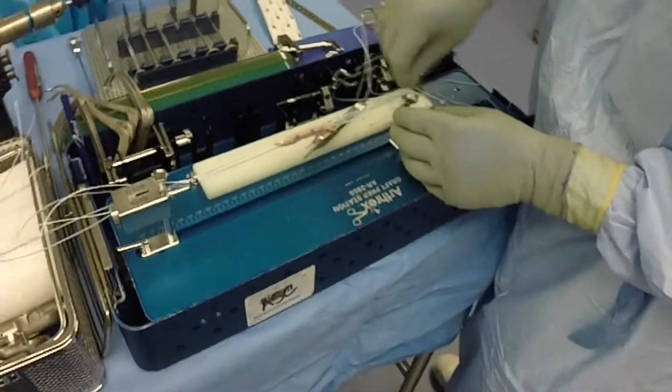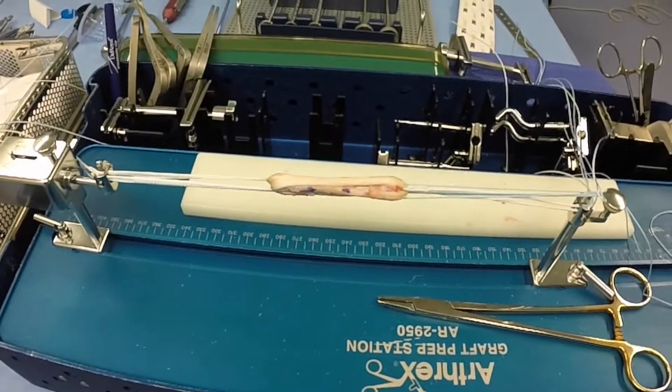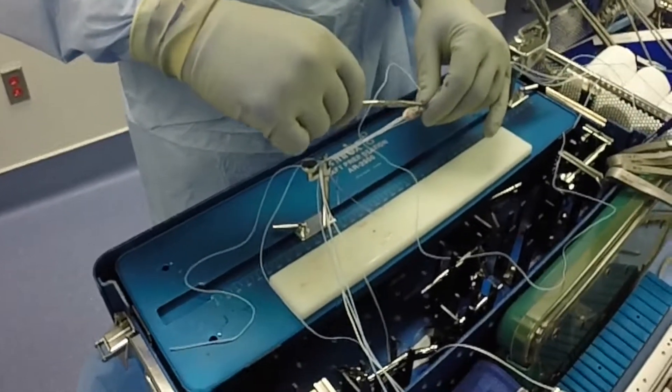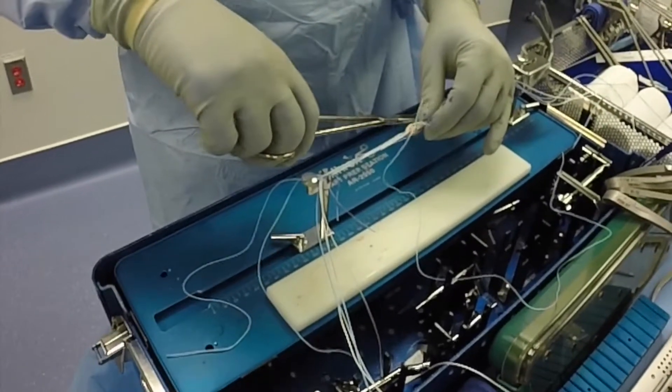The tapes are then secured to the graft station, and here you see the quadrupled graft prior to cerclage stitches being placed. We then placed two cerclage stitches.